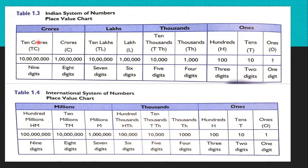The crores period consists of crores and ten crores. Always remember, the place value chart starts from the right and moves to the left. Always, the number on the left side will be 10 times bigger than the number on the right side. For example, 10 times one will make 10, and 10 times 10 will make 100, and so on.